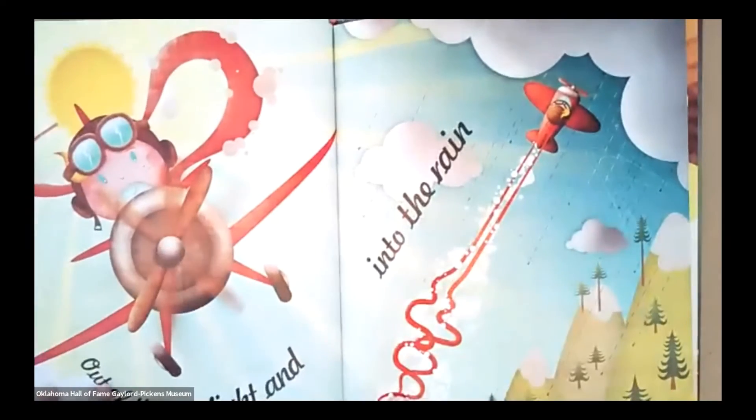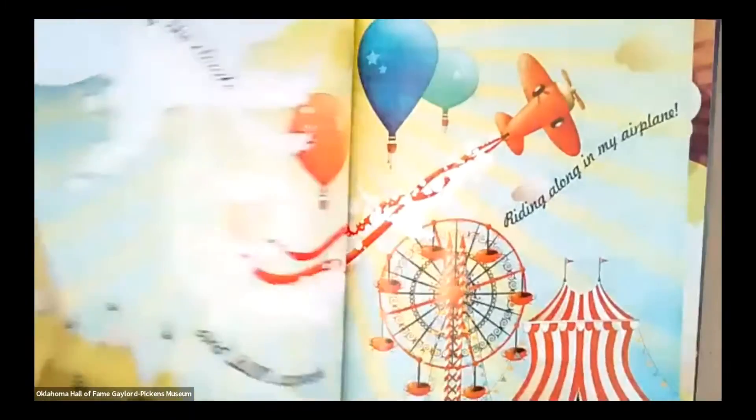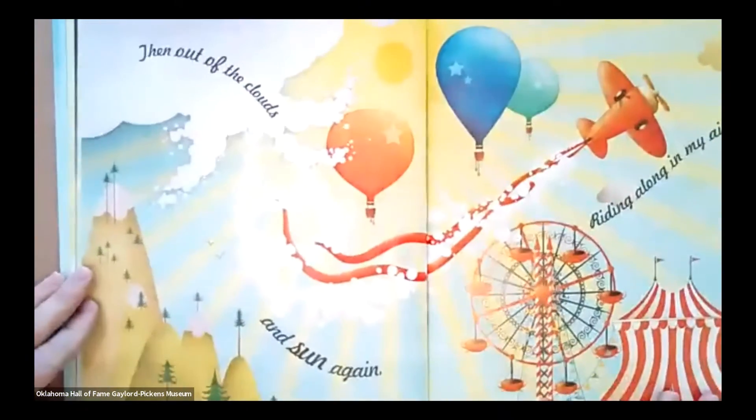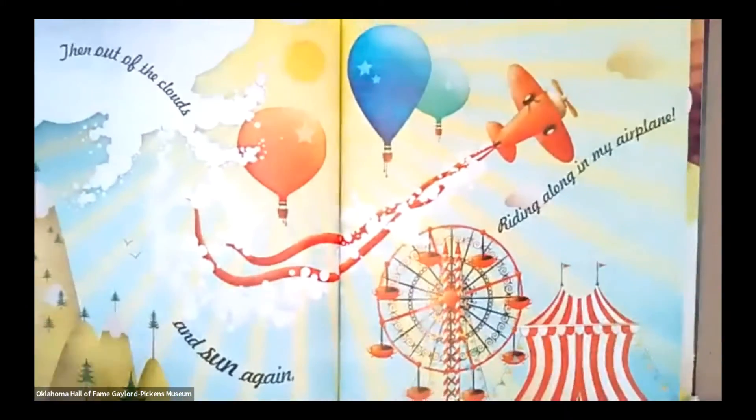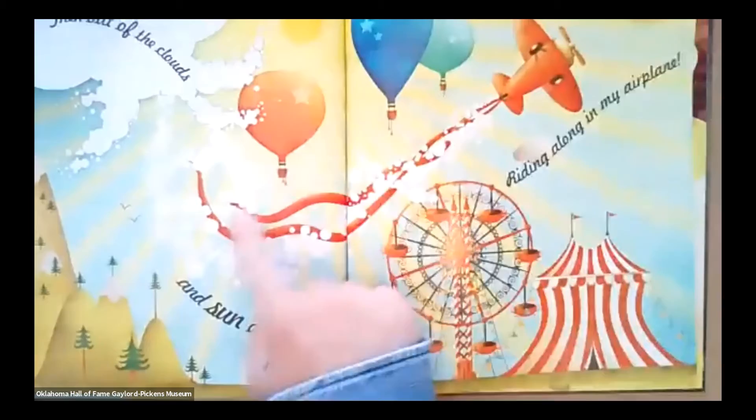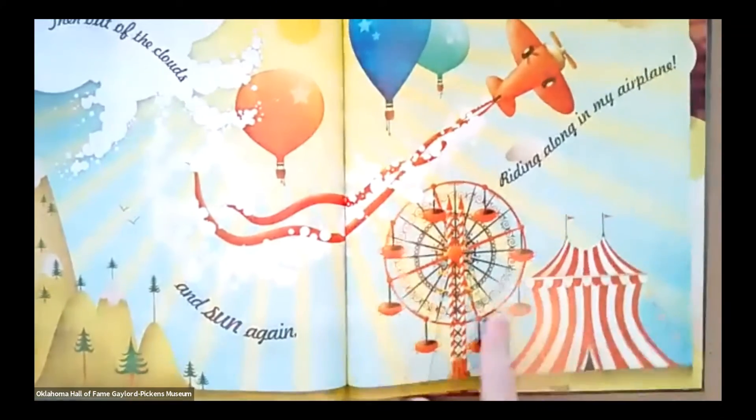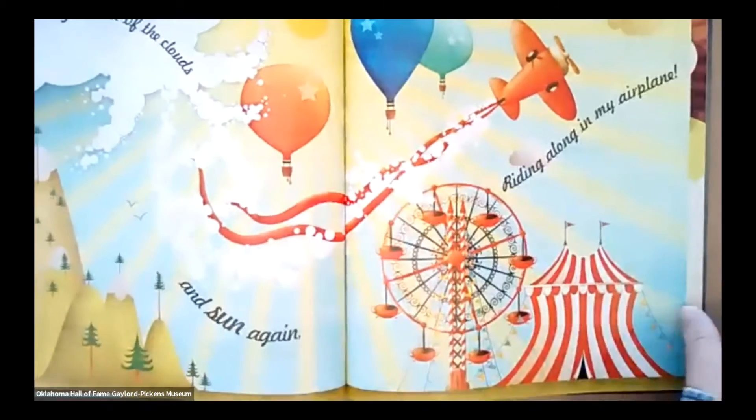Out of the sunlight and into the rain. That sure is a long scarf. And out of the clouds and sun again. Riding Along in My Airplane. So look, there's some hot air balloons up there with the carnival down below. Still with that long scarf. That's impressive.